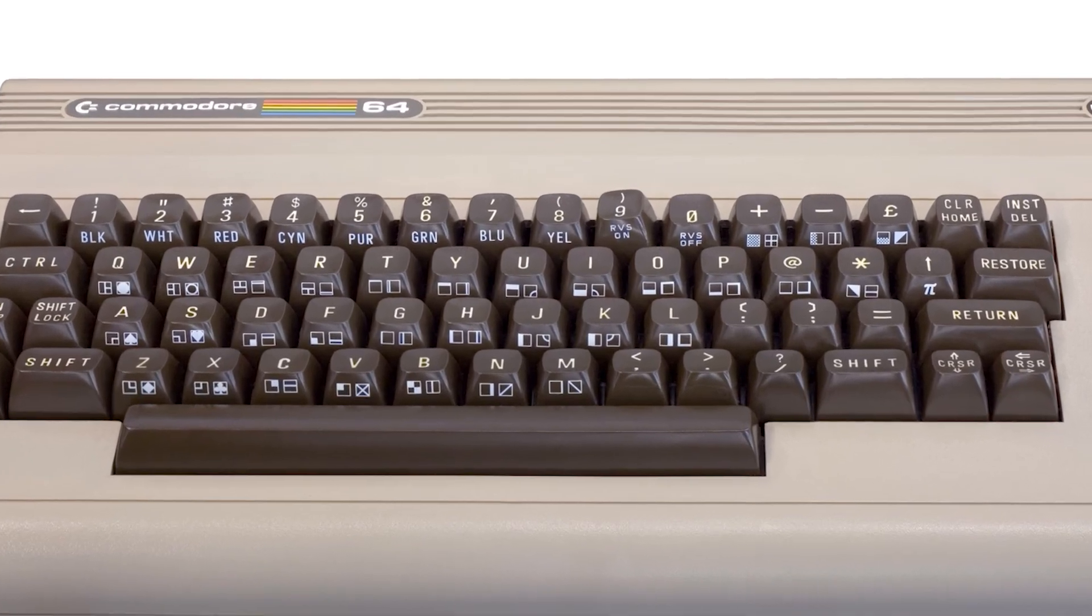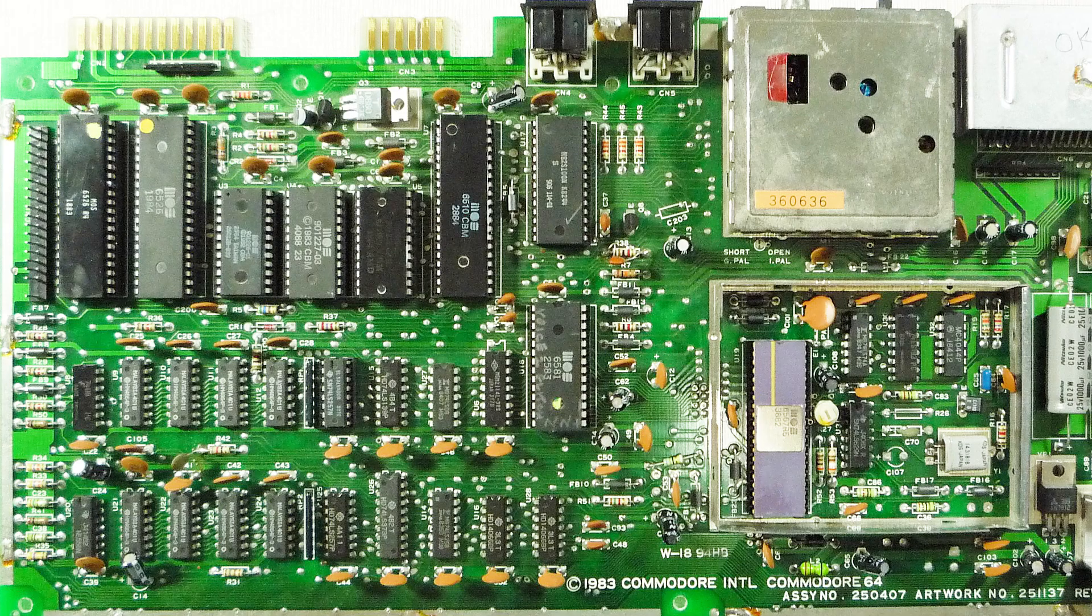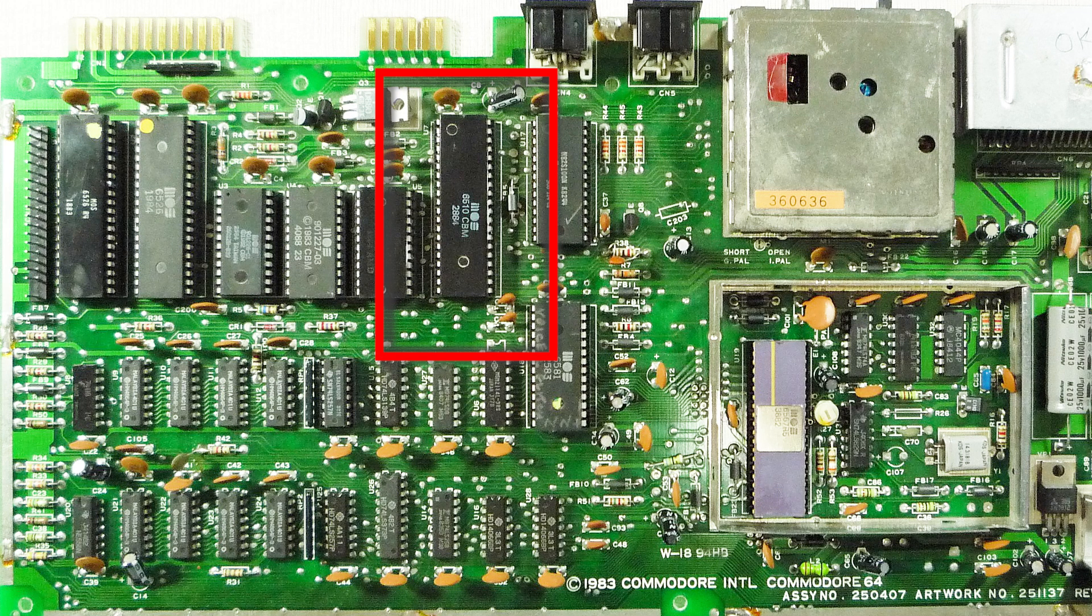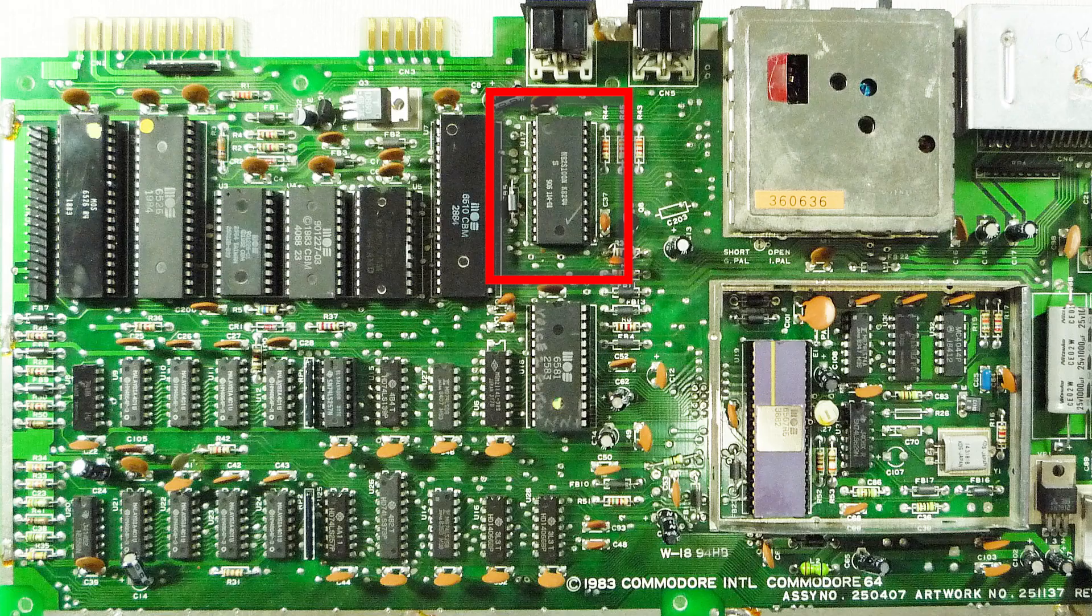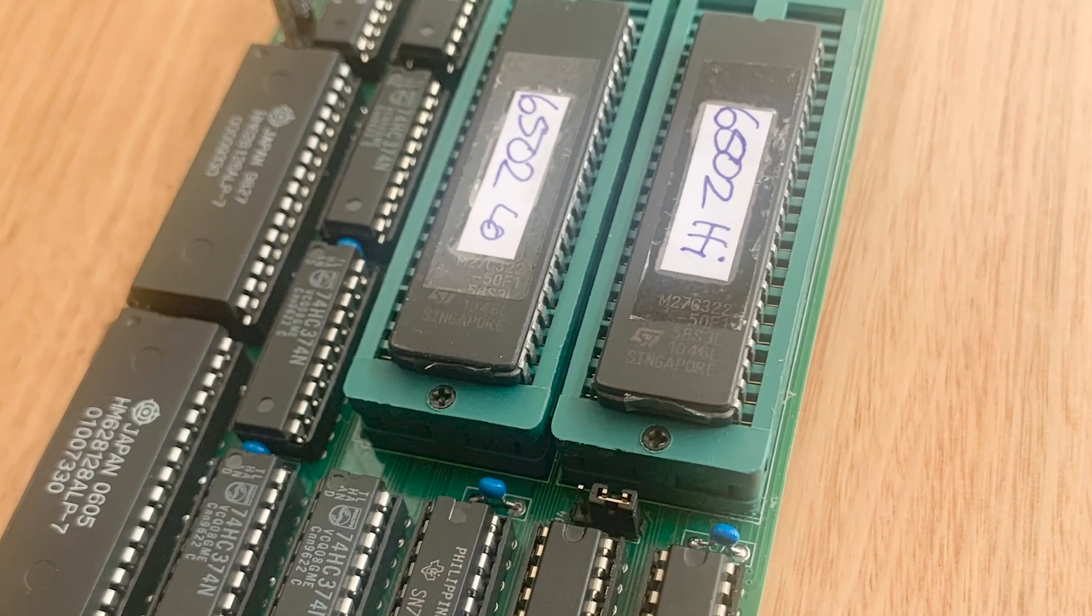What if you could build a Commodore 64 entirely from scratch? I mean, no 6502 CPU, no VIC-2 chip, no SID chip and no programmable array logic. Just good old logic chips,